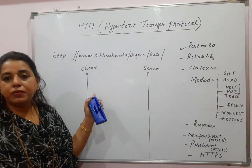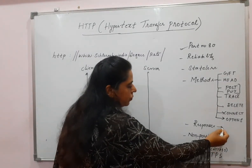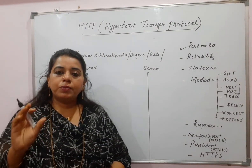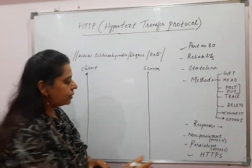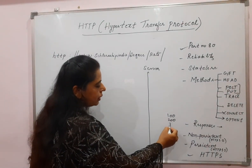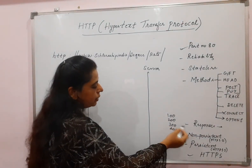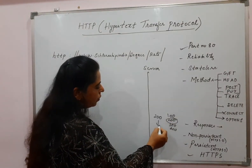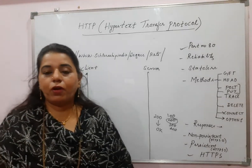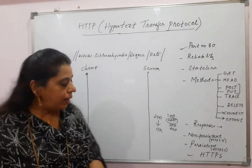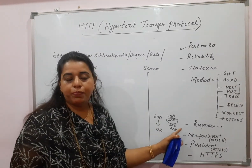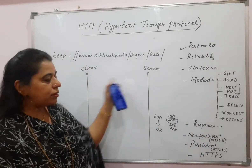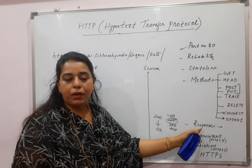When these methods are used by the client to get information from the server, responses also come from the server side. There is a list of responses given in terms of three-digit numbers — there are responses in the 100 series, 200 series, 300 series, and 400 series. For example, if it sends a response of 200, the meaning is 'OK' — that means your request was successful. Responses are always sent in the form of three digits.